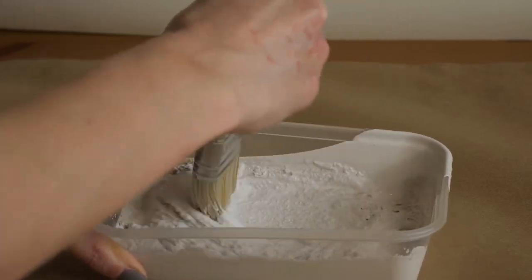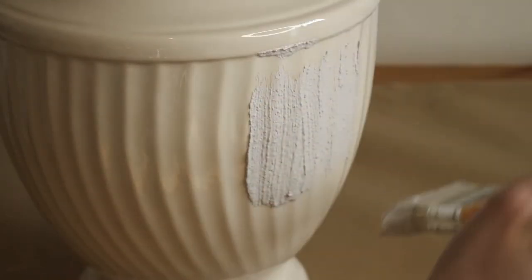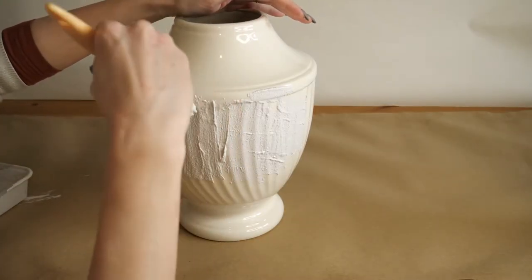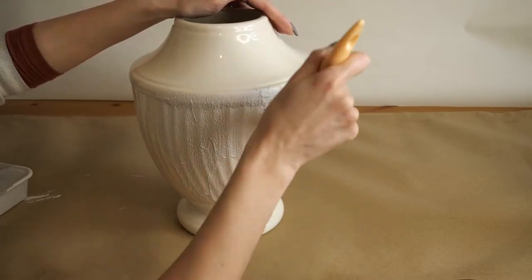I then painted this all over the pot. As you can see, it was already starting to give the pot a new texture, but even after all the sanding, the paint didn't stick very well and it was quite patchy. So I then had to go in and give it a second coat.